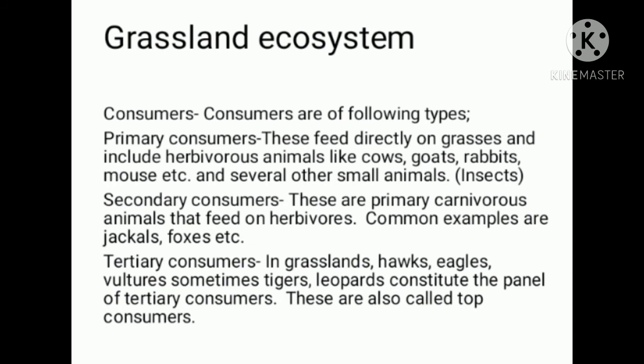The tertiary consumers in grasslands include hawks, eagles, vultures, tigers, and leopards, which constitute the top-level consumers. These are also referred to as top consumers.